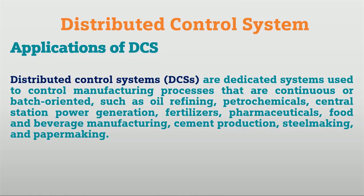What are the applications of DCS? Mainly in oil and gas sector, all process industries — whether continuous process or controlled manufacturing process — like oil refining, petrochemicals, power generation, fertilizers, pharmaceuticals, food and beverage industries, cement production, and steel making. So in every process industry, mostly DCS control systems are used.